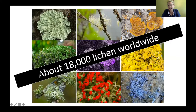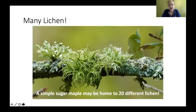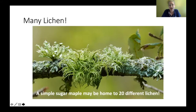So what actually is a lichen? There are about 18,000 lichen worldwide, and they can be many different colors — orange, green, gray, purple. In North America alone there are 3,600 different types of lichen, and in just the state of Michigan there are 800 different types. Even on one branch of a single sugar maple tree there can be up to 20 different lichen.